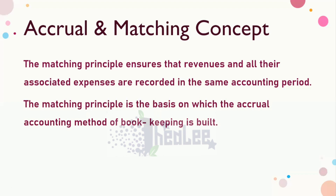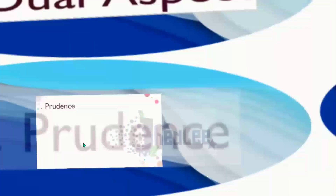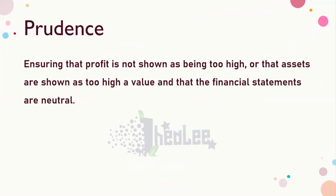Now let us move into the prudence concept, also referred to as the conservatism concept. This ensures that profit is not shown as too high, assets are not shown as too high in value, and that the financial statements are neutral. It is not appropriate to deliberately overstate assets or revenues. If profit is overstated, a trader may believe income is more than it really is and may withdraw too much money from the business, which will deplete capital and could eventually cause the business to collapse.